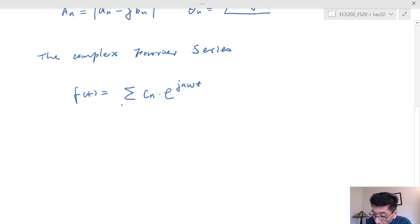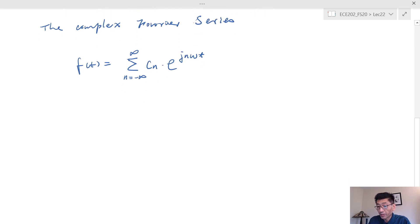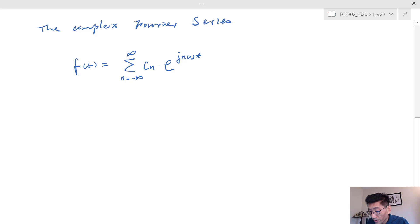In this one here, n is going to go from negative infinity to positive infinity. So this includes all the Fourier coefficients, including the DC component, and C_n is the complex Fourier coefficients.